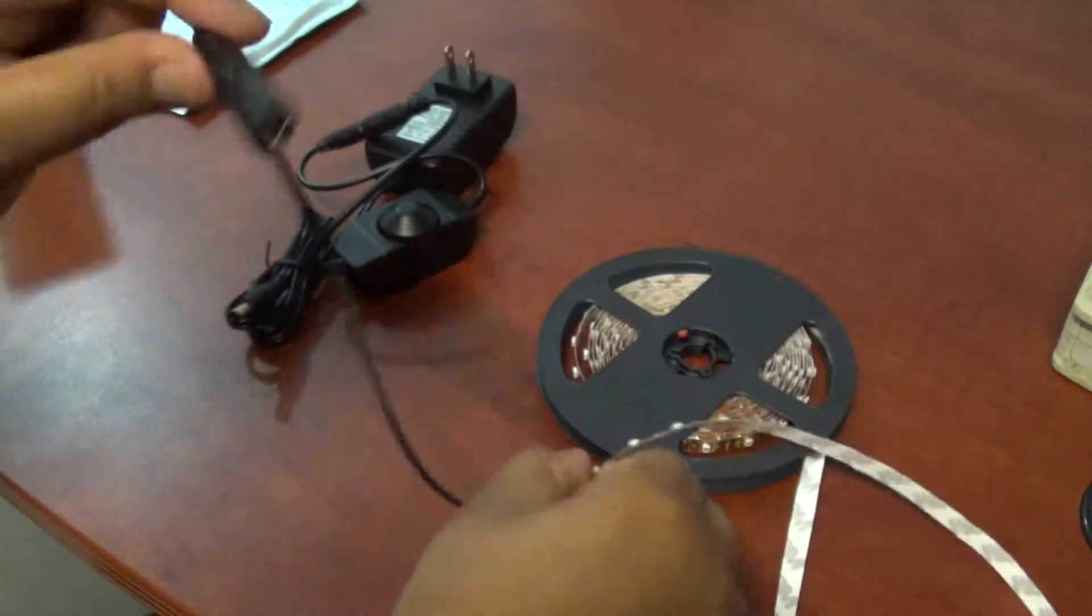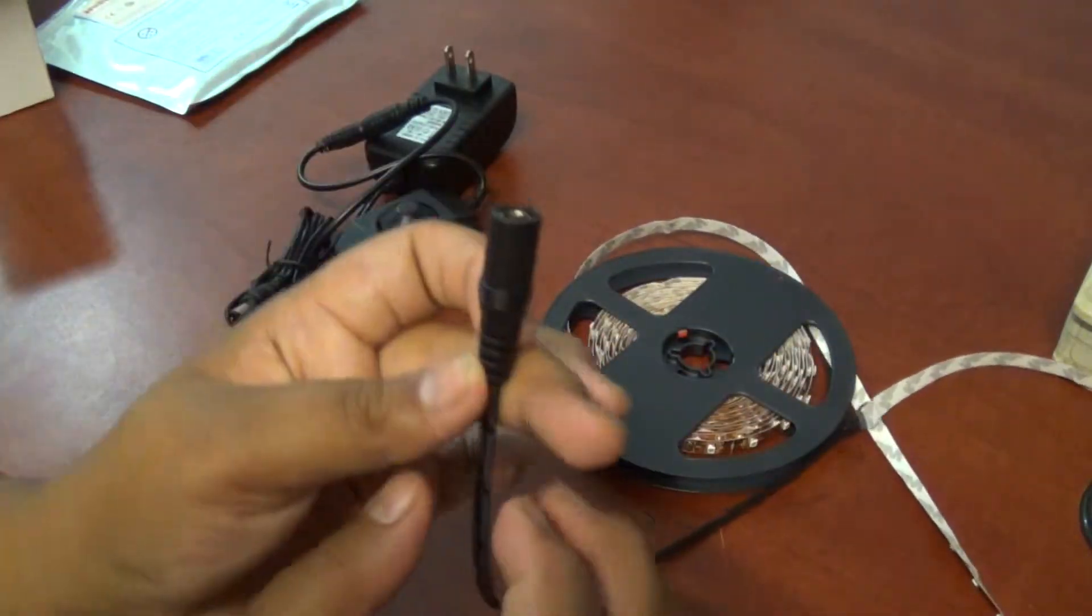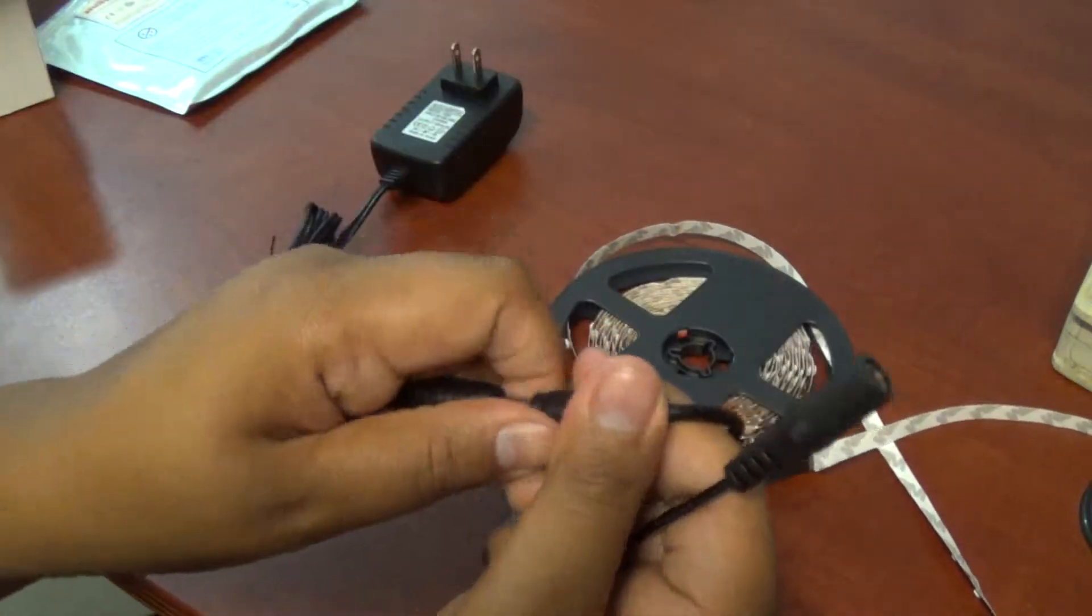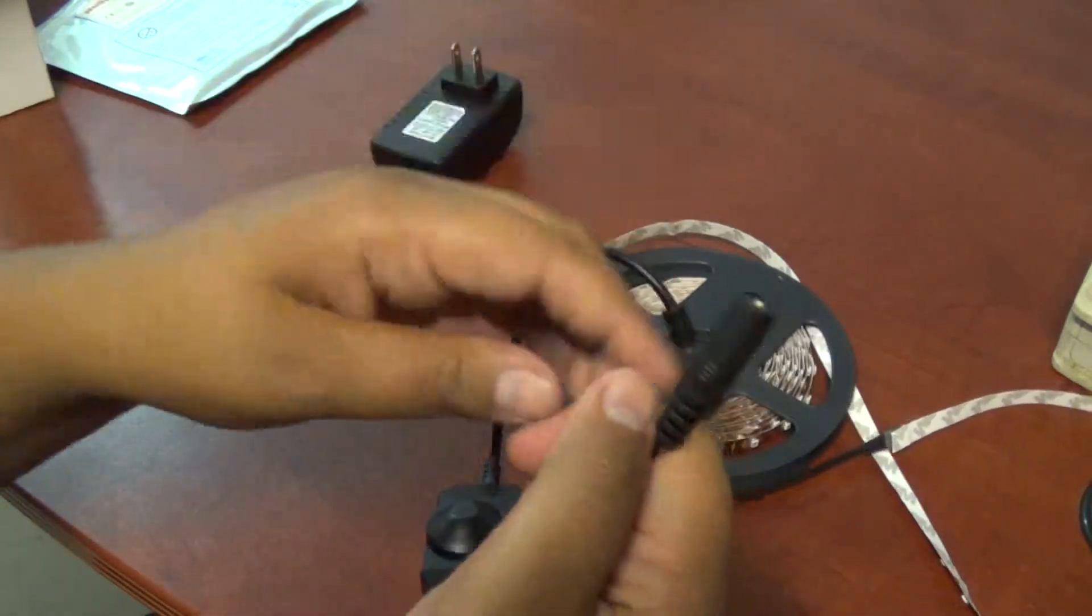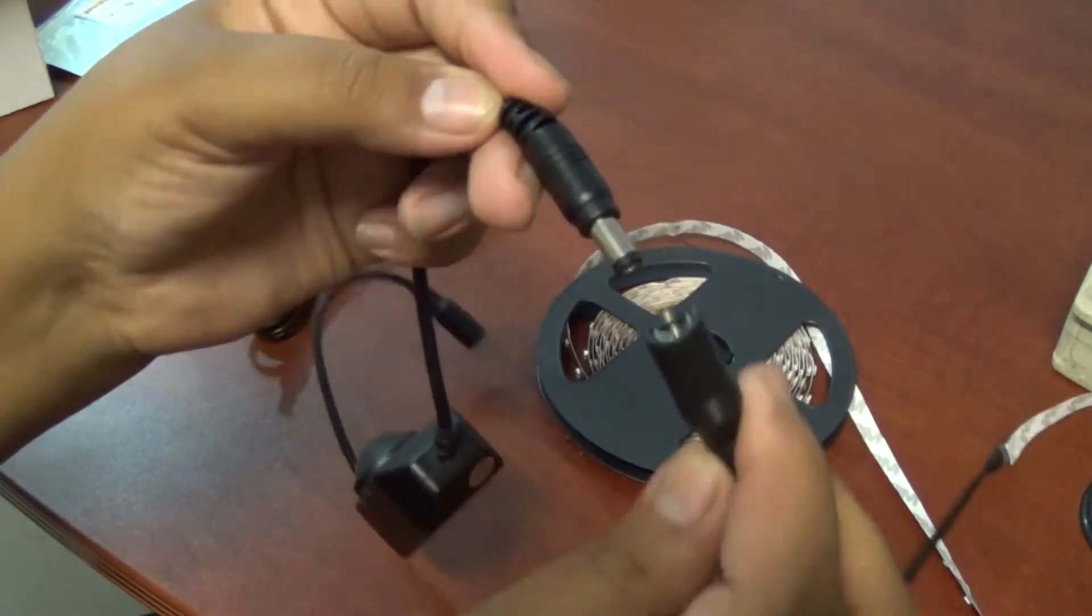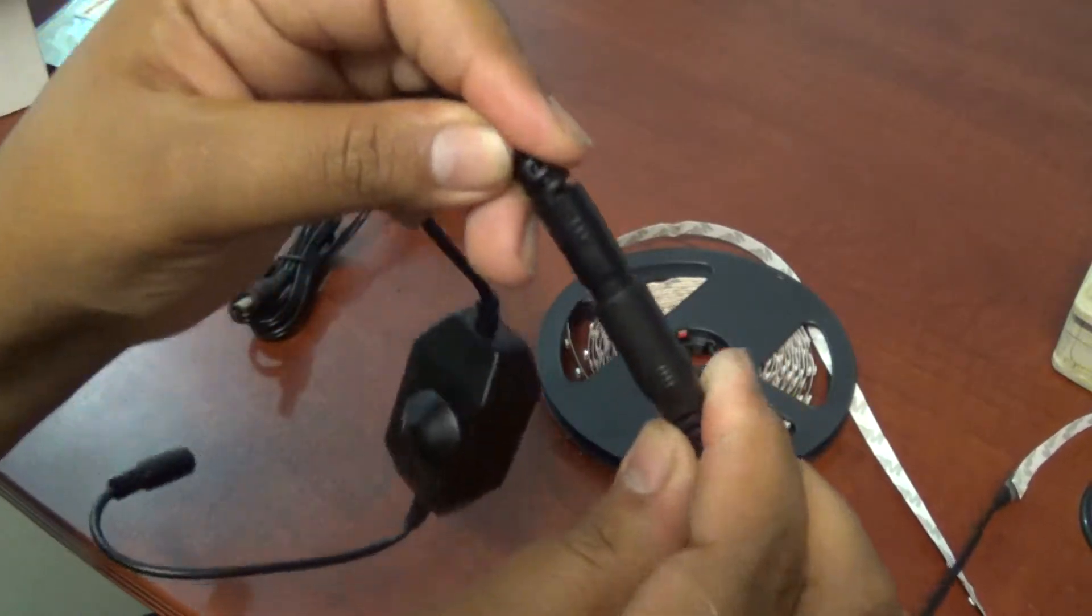And on one end of your LEDs you have this, what is called a DC jack. It's easy to connect. You have to connect it to your LED dimmer, this part, like that.